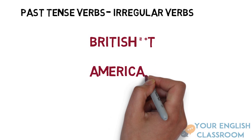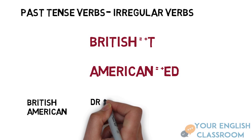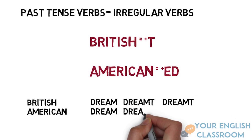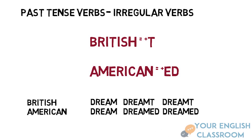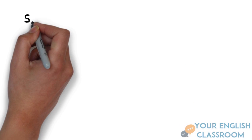Past tense verbs are also different, specifically irregular verbs. Us British, we end ours with a T and Americans end theirs with ED. So for example, Brits say 'dream' in the present, 'dreamt' in the past tense, and 'dreamt' in the past participle, and Americans say 'dream', 'dreamed', and 'dreamed'.